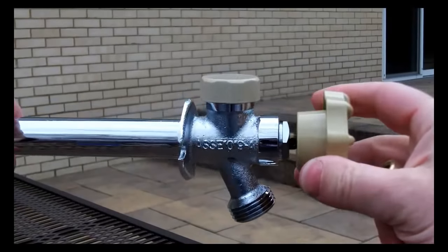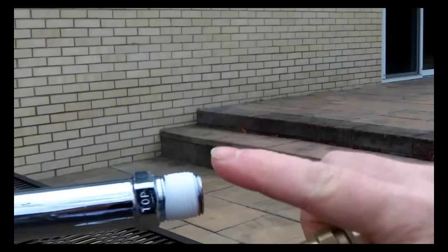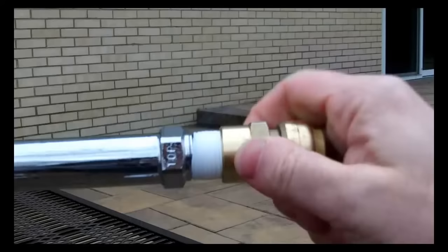So here is the frost-free silcock, and I'm going to put a SharkBite fitting on it. Now the one end of the SharkBite fitting is threaded, and I put some Teflon tape on the other end of the silcock. So I'm going to screw this on.